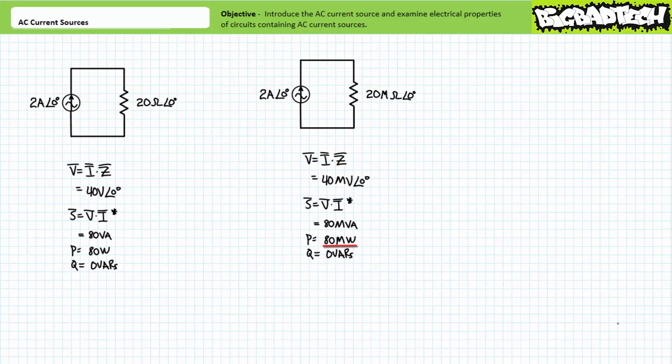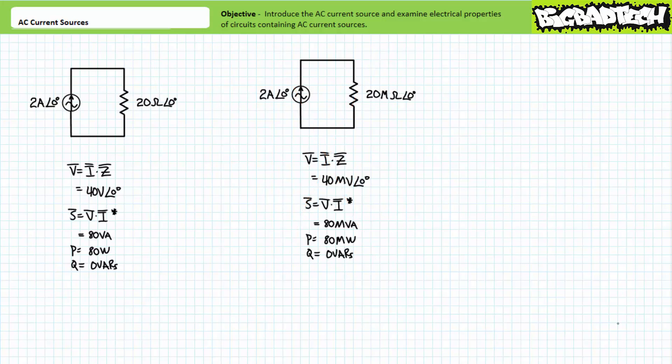80 megawatts — can you see the difficulty in purchasing a real world current source that can push two amps through a circuit regardless of applied load? It's not going to happen. However, if we're willing to suspend our belief in physics, sure it could happen, and our Ohm's law analysis gives us the necessary proof it could.